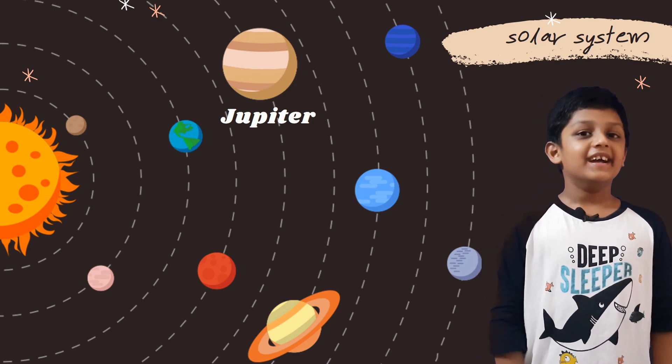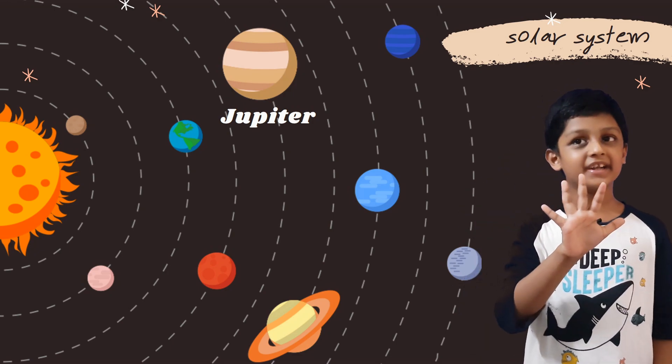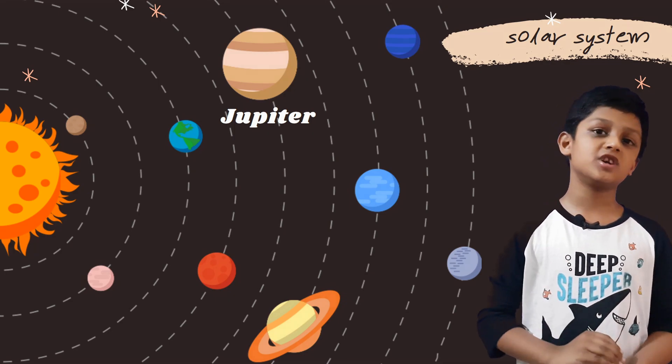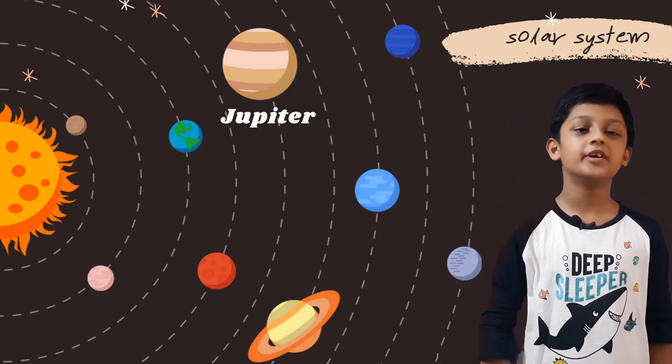Jupiter, it is the fifth planet from the sun. It has a giant spot that is bigger than Earth.